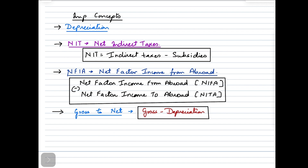Now let us take a look at some important formulas and concepts. The first concept is depreciation, which can also be called current replacement cost, consumption of fixed capital, or replacement costs — if any of these appear in your question, treat it as depreciation. Depreciation is basically the reduction in the market value of goods and services due to their usage or passage of time. For example, if you buy a car in 2024 and sell it in 2025, you won't fetch the same price because you've used it, so the reduction in price is depreciation.